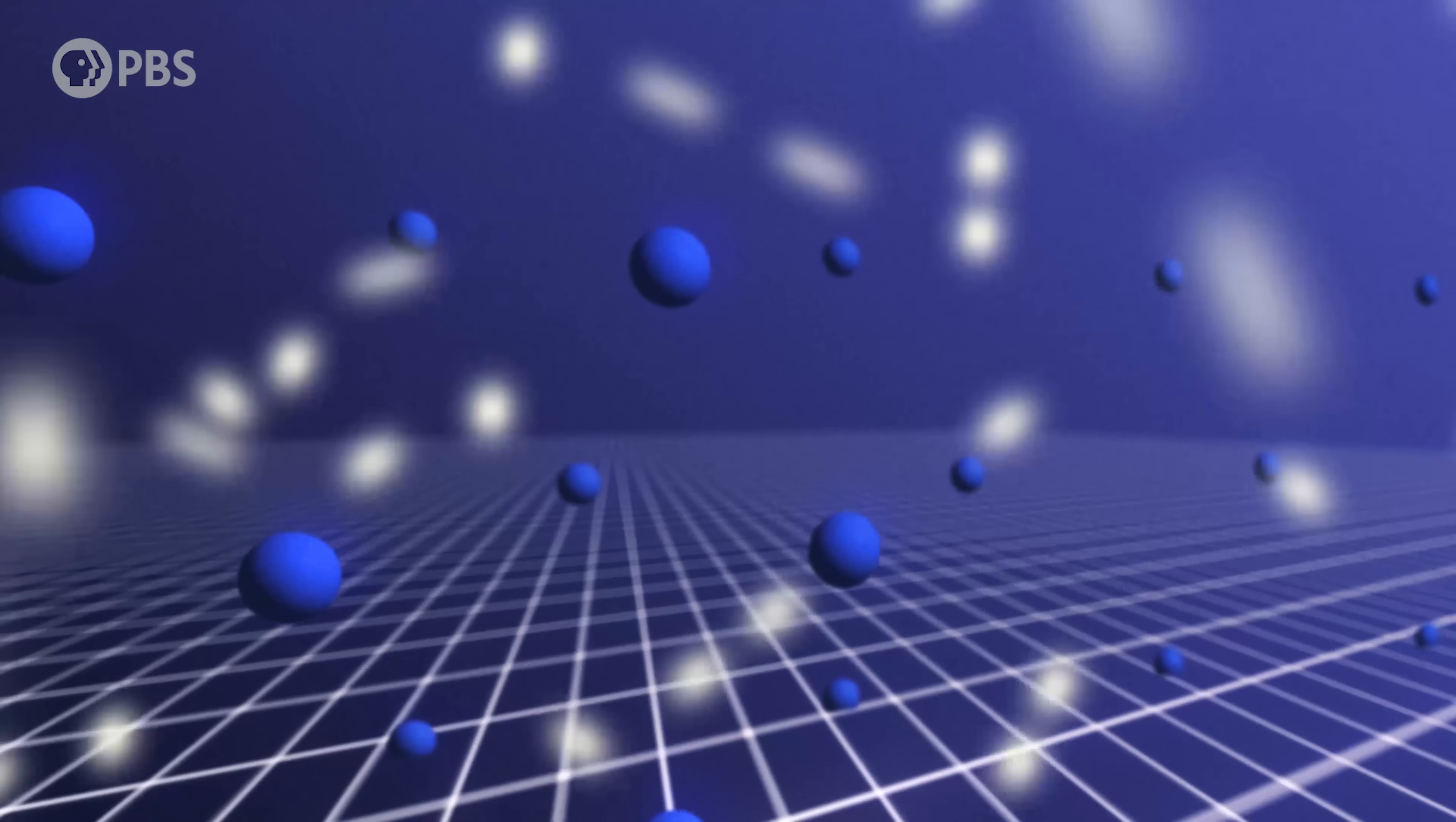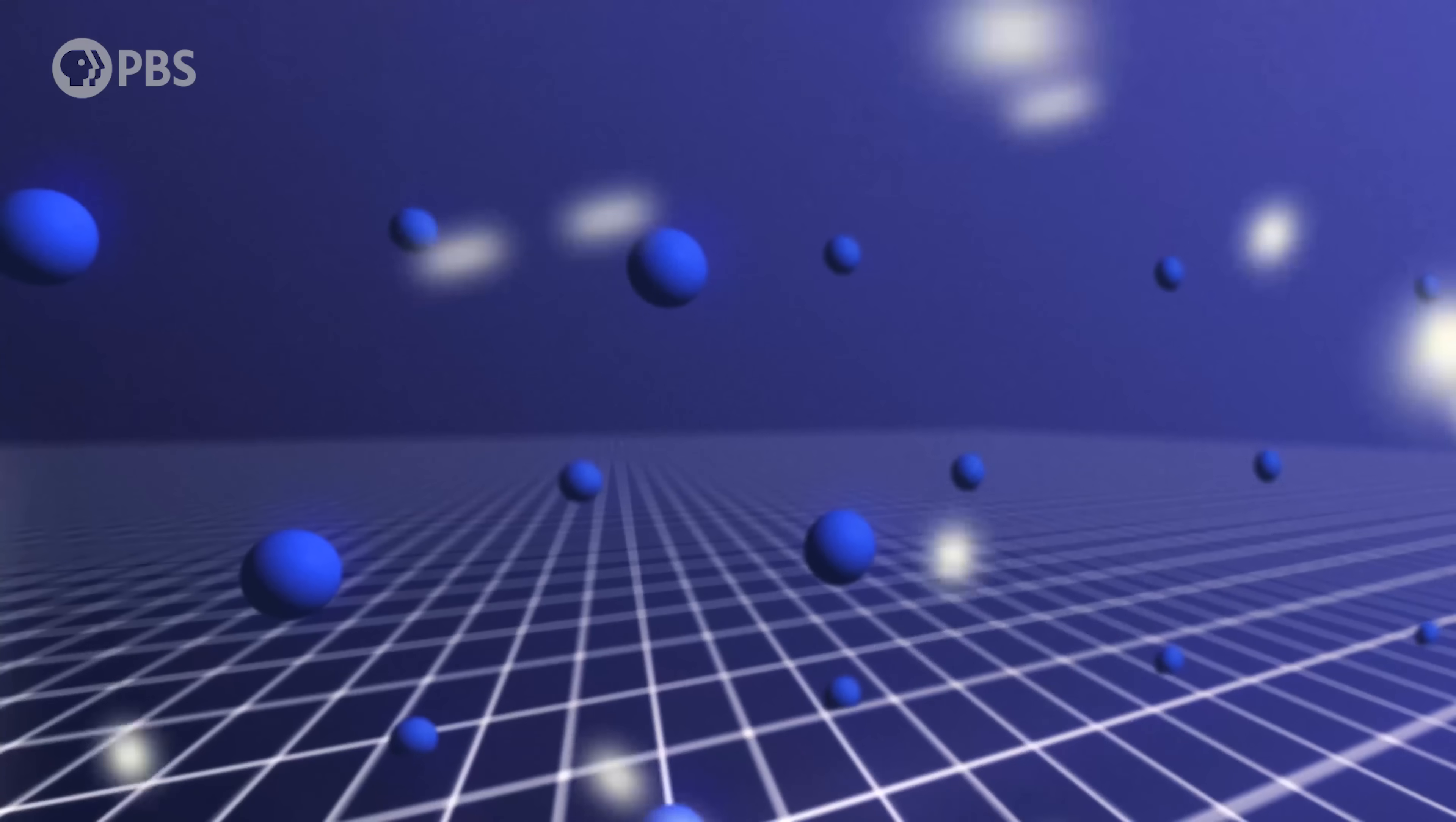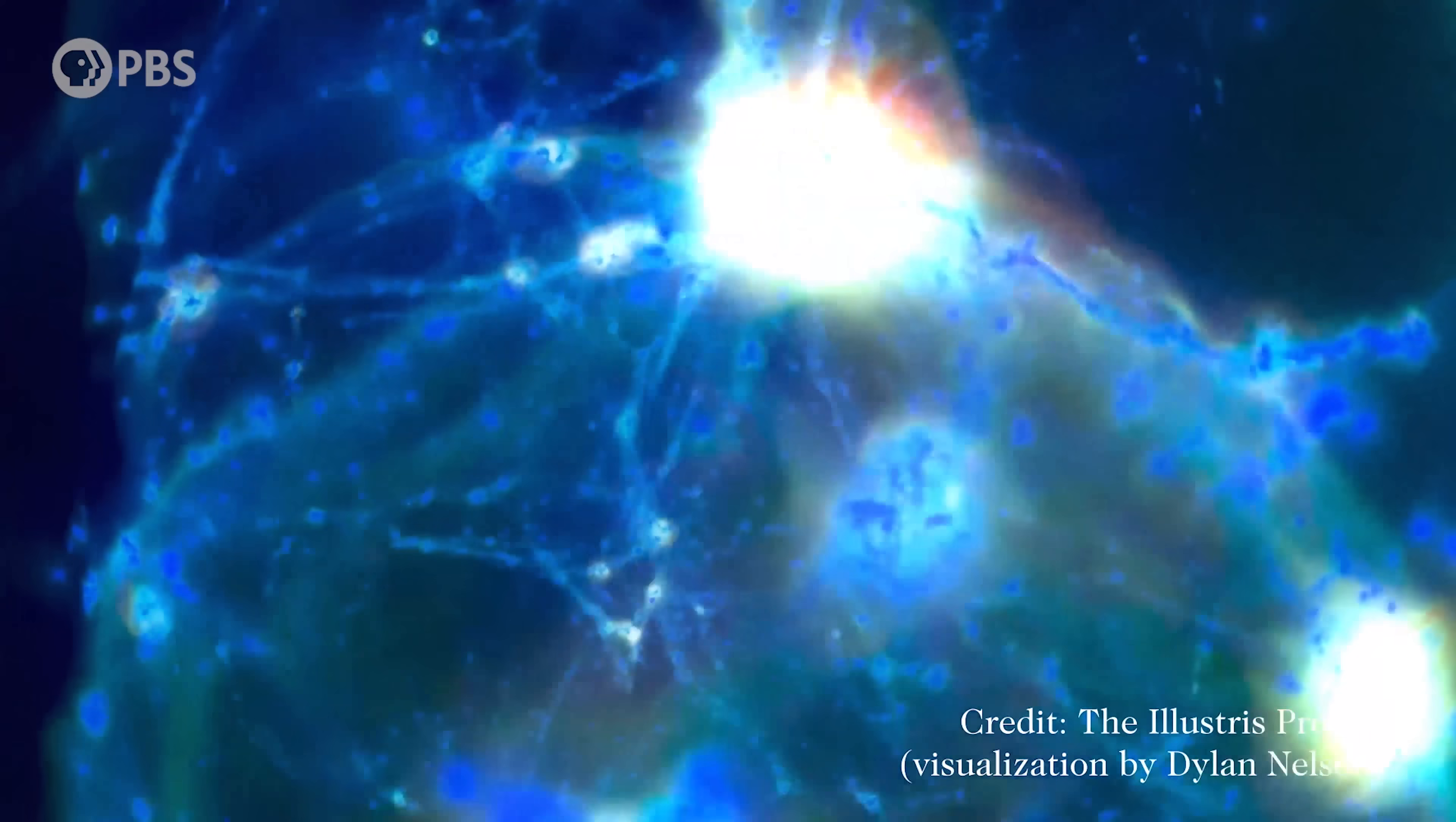The fact that we see a universe full of matter means there must have been a tiny imbalance between matter and antimatter. Enough to leave a bit of leftover stuff to produce the stars and galaxies and particle physicists that we see around us today.